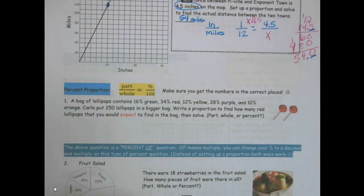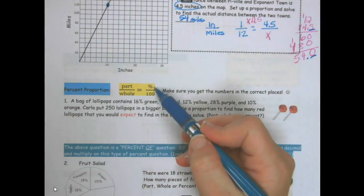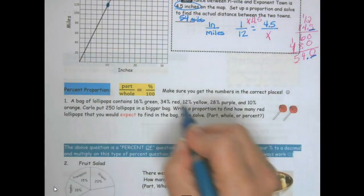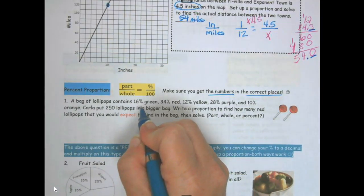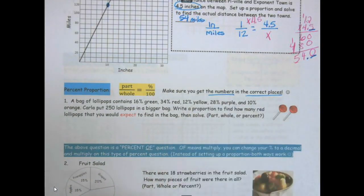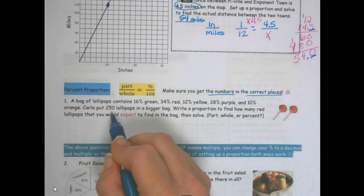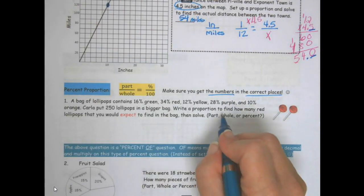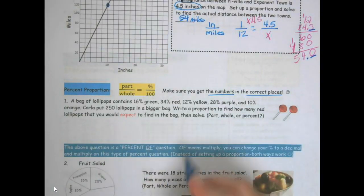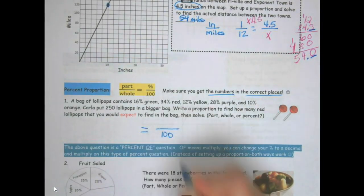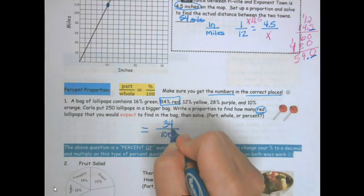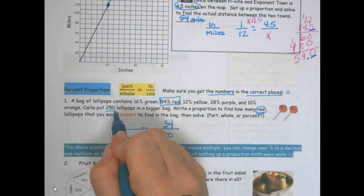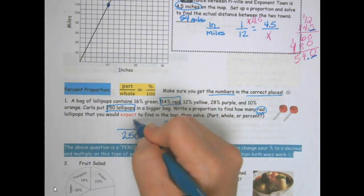Remember this is part over whole equals percent over 100. Percent is always out of 100. Again just like our proportions make sure you put the numbers in the correct places. A bag of lollipops contains 16% green, 34% red, 12% yellow, 28% purple and 10% orange. Carla put 250 lollipops in a bigger bag. Write a proportion to help find out how many red lollipops you would expect to find in the bag, then solve. So this number is going to be always 100 and we want to know red and red was 34%. This has a percent sign so I know it goes in my percent place. How many did she start with, my whole? It's going to be 250 and this is what I'm wanting to know.